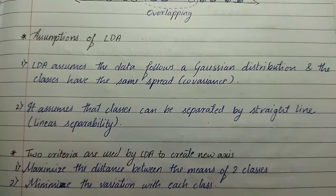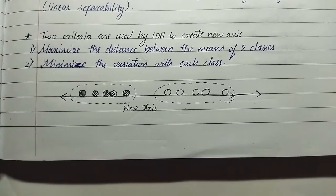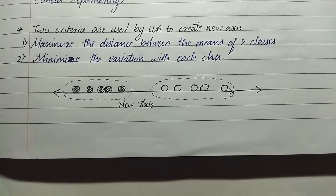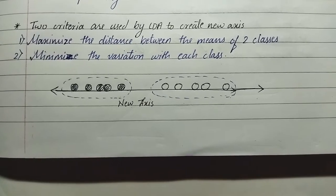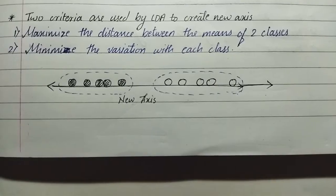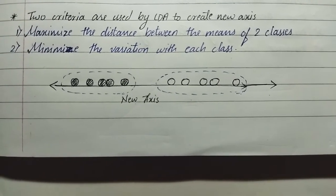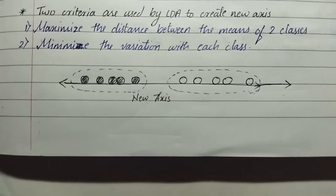Now we'll see the two criteria that are used by LDA to create new axis. First is maximize the distance between the means of two classes, and second is minimize the variation within each class.